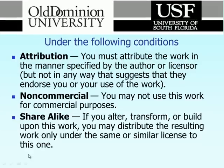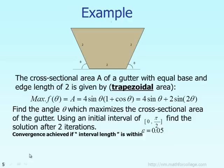We want to find the cross-sectional area A of a gutter that has an equal base and edge length, each equal to 2. So, for example, the base equals 2 and the edge length is also equal to 2.